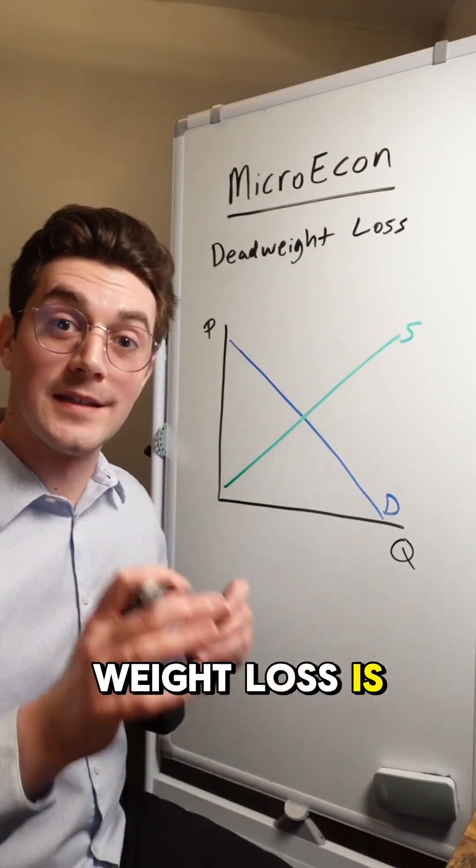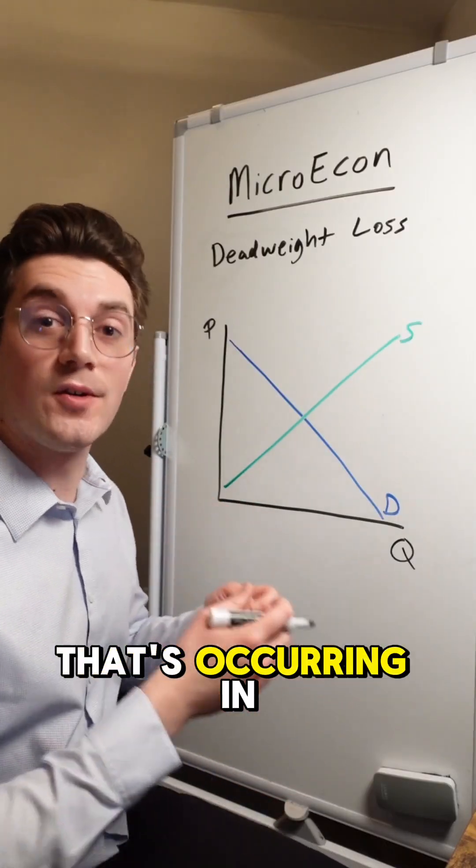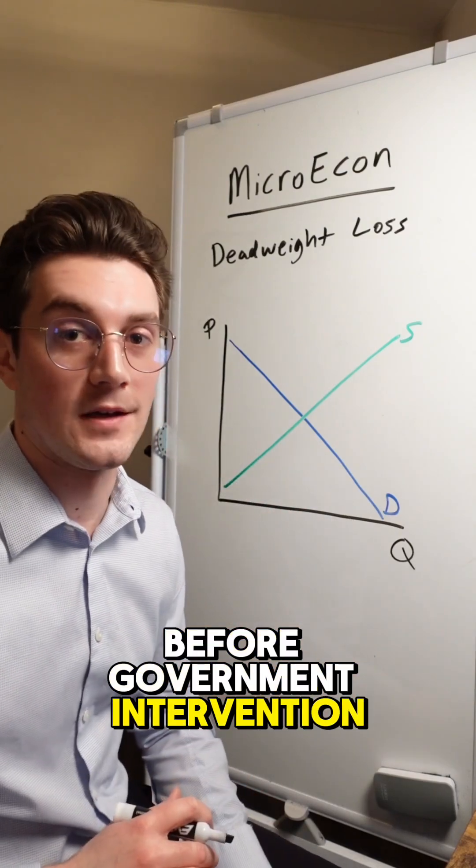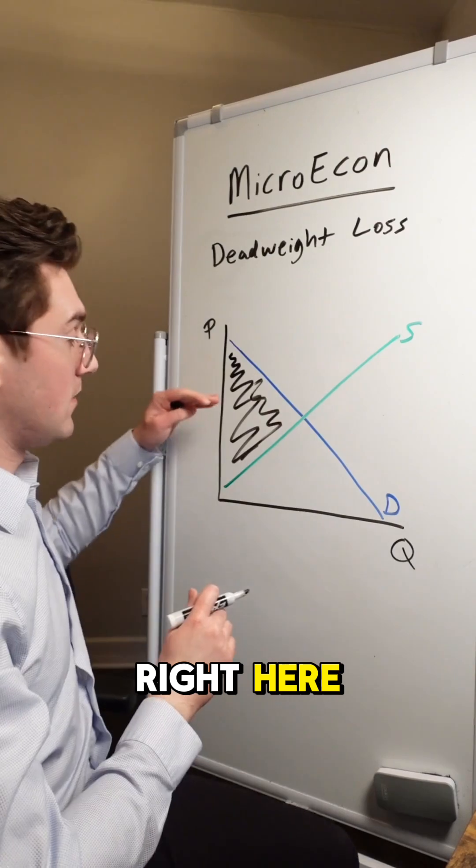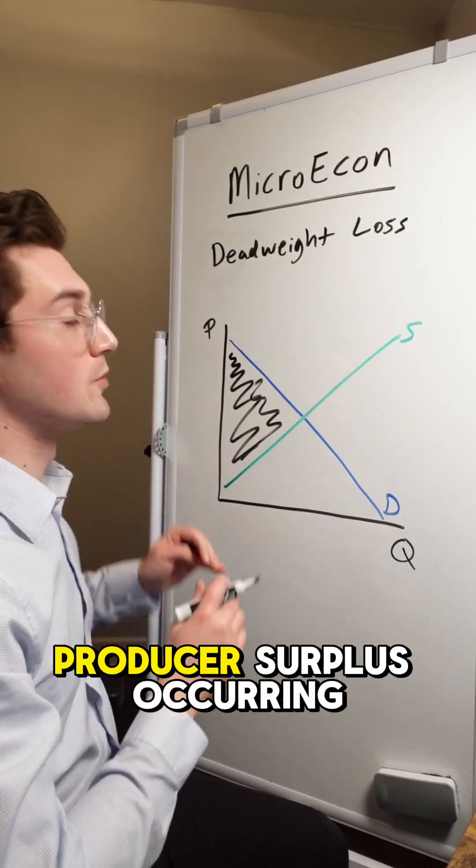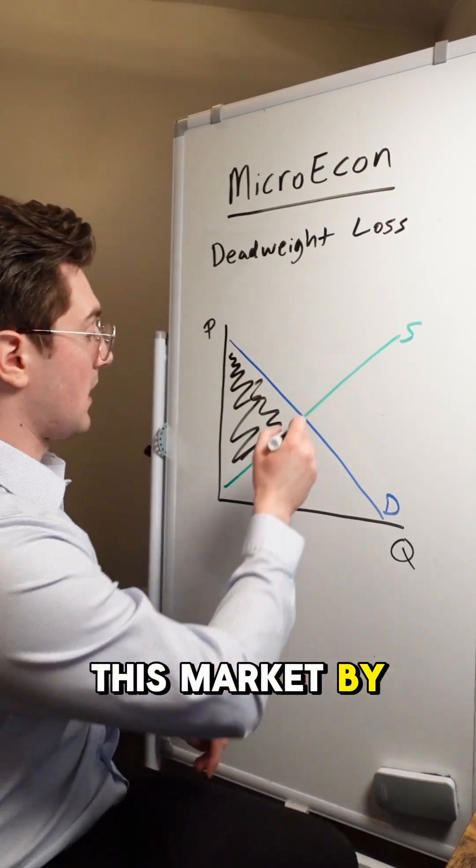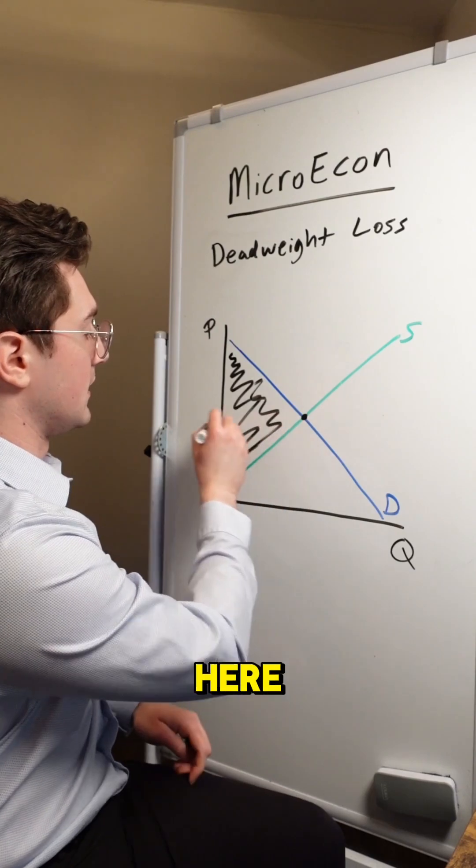Alright, the first step to understand deadweight loss is to understand the total surplus that's occurring in the market before government intervention. So right now in this market, the total surplus is this triangle right here. This represents all the consumer and producer surplus occurring in this market by operating at this equilibrium price right here.